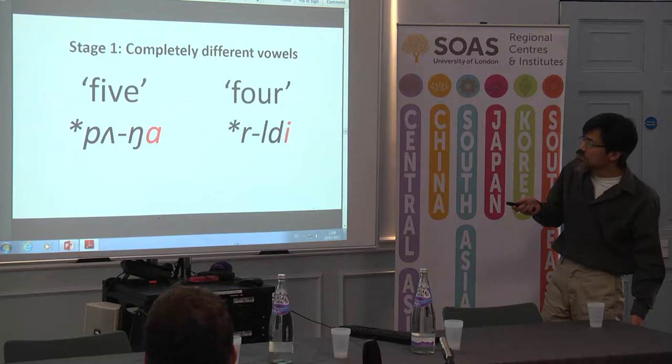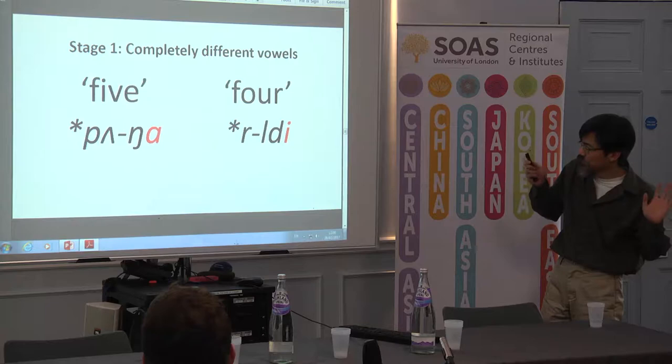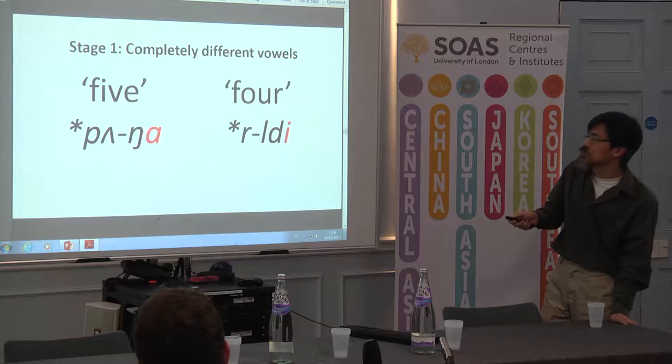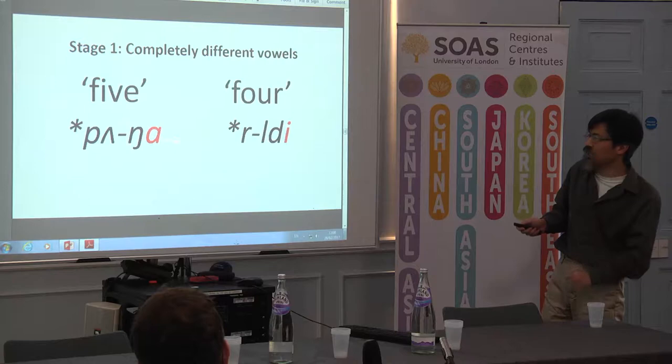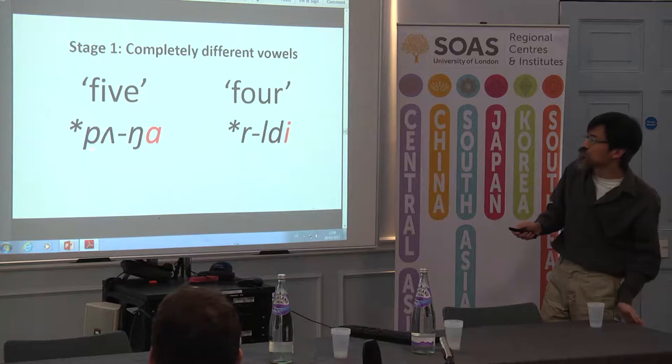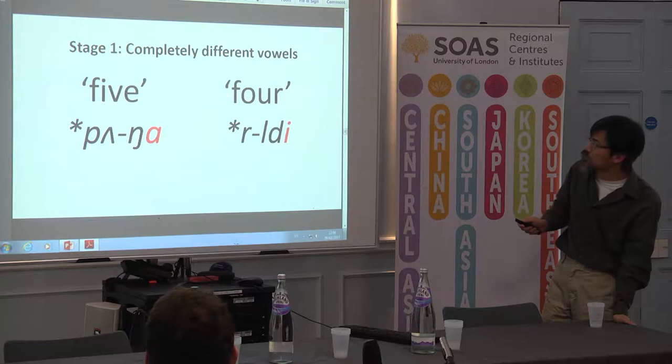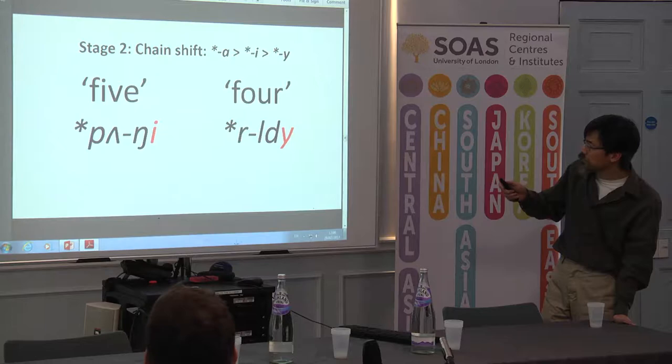Let me see if I can make this work. Suppose the Tangut word for five originally had A, like all the other early Sino-Tibetan words. If we trace back the word for four, its U goes back to an E. So in the earliest stage, they have completely different vowels — nothing in common at all. Then in Tangut there is a vowel shift in which E becomes U. So the E of four became U.